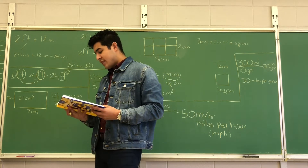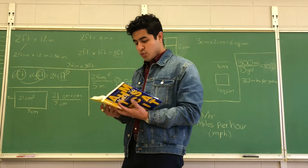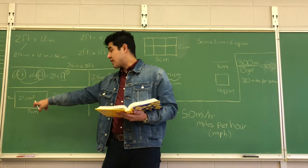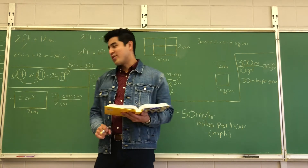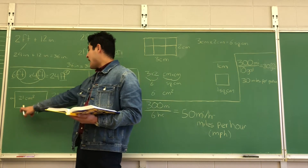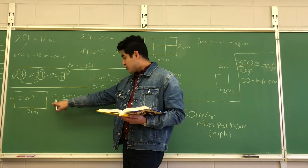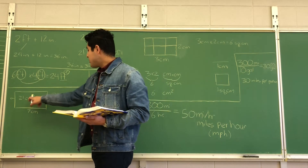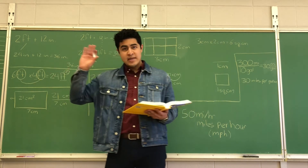Units also change when we divide measurements. For example, if we know the area of a rectangle and the length, we can find the width by dividing. We're given an area of 21 centimeters squared and the length of one side is seven centimeters. When we divide, we have 21 over 7, and to represent centimeters squared I've written centimeter times centimeter.